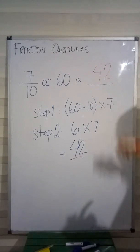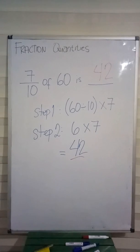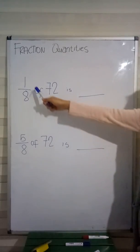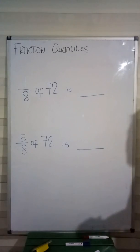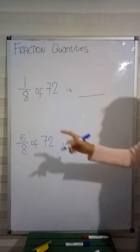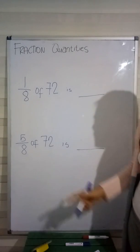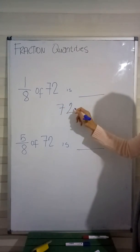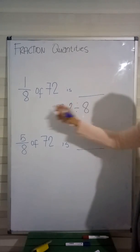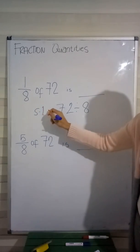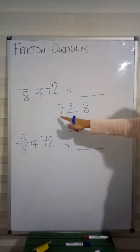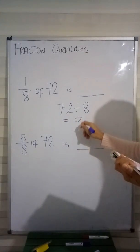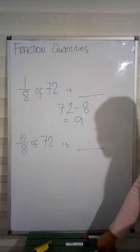Simple as that. So just a quick recap for fraction quantities. If we have the numerator 1 — for example, 1 eighth — what we need to do is just divide the number by our denominator. In this case we have 72, so we divide 72 by 8. 72 divided by 8 is 9. Therefore, 1 eighth of 72 is 9.